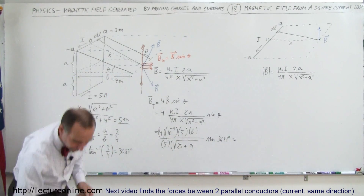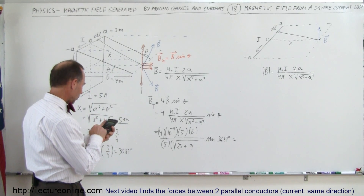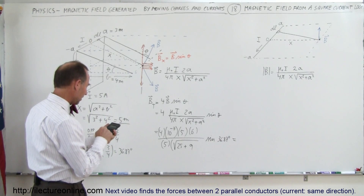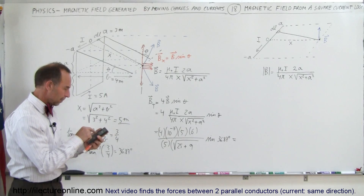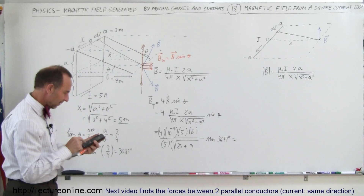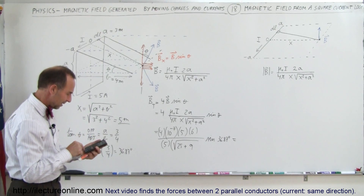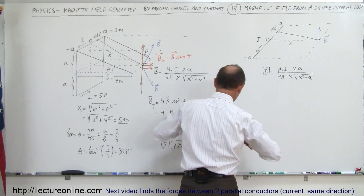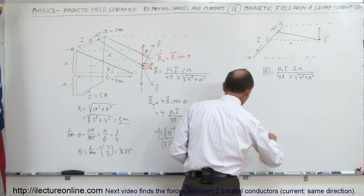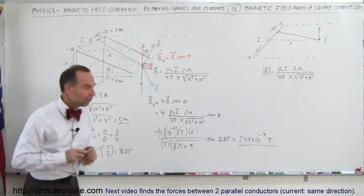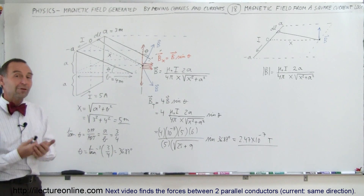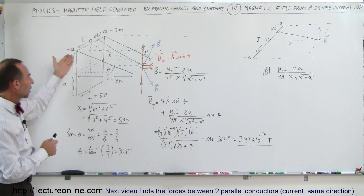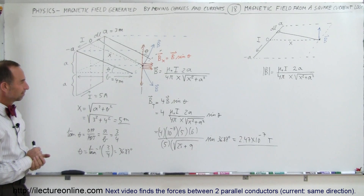Carrying out the full calculation gives 2.47 × 10⁻⁷ Teslas — that's the magnetic field at that location from a square current loop. This is a nice example of how, by seeing the analogy to a flat-plane segment, we can cleverly find the magnetic field from a square loop. That's how we do that.